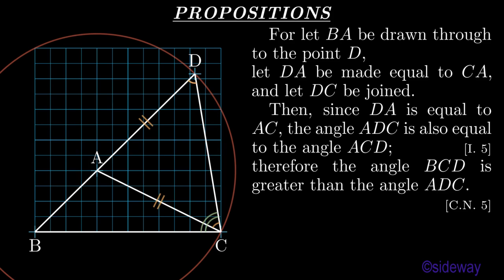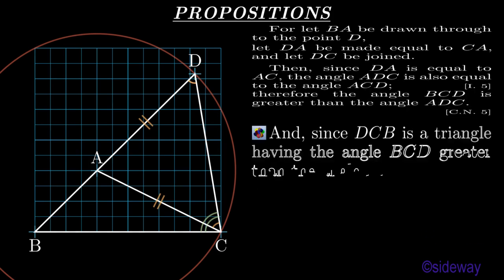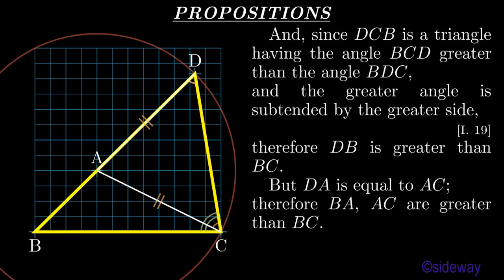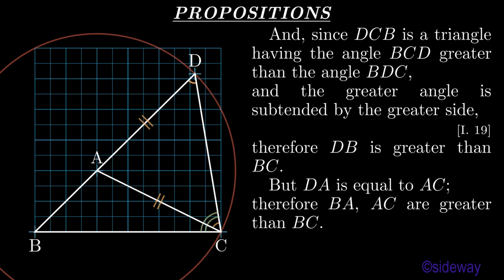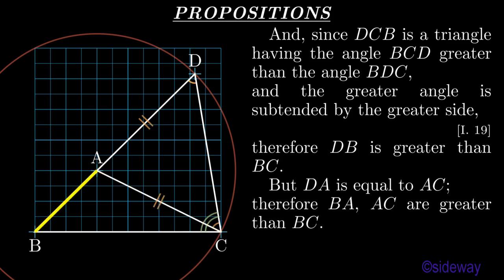And since DCB is a triangle having the angle BCD greater than the angle BDC, and the greater angle is subtended by the greater side, by Book 1 Proposition 19, therefore DB is greater than BC. But DA is equal to AC. Therefore BA, AC are greater than BC.